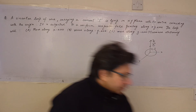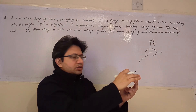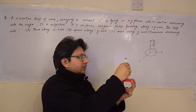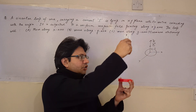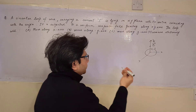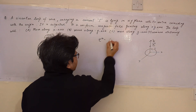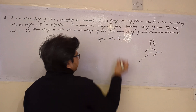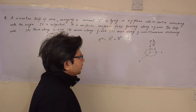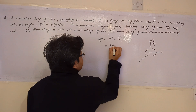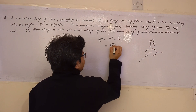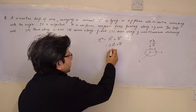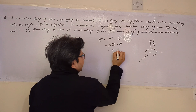The situation is like this — this is the coil placed in the xy-plane, and this is the z-direction, so the magnetic field is acting in this direction. We know the formula of torque acting on a current-carrying loop is τ = m × B, where m is the magnetic moment and B is the magnetic field. The magnetic moment m equals iA, where A is the area vector. So torque = iA × B.